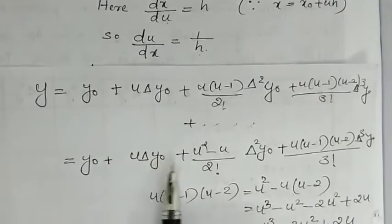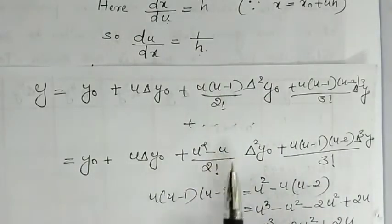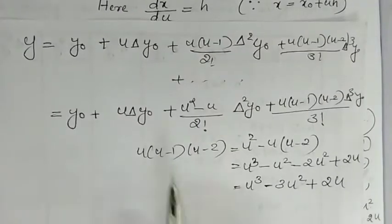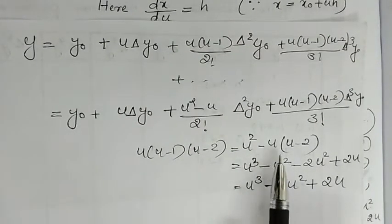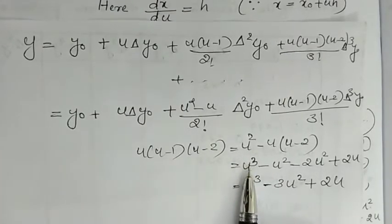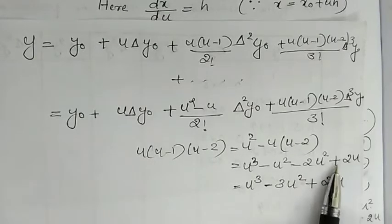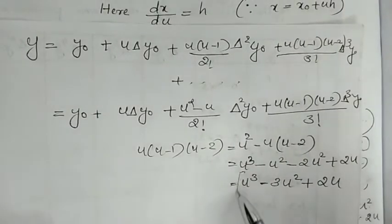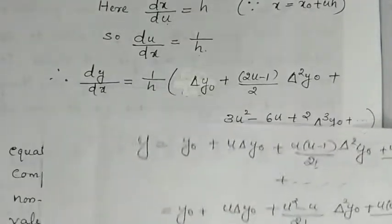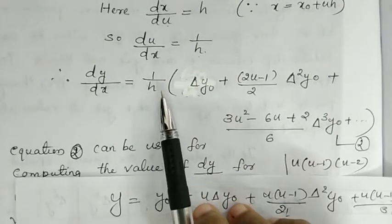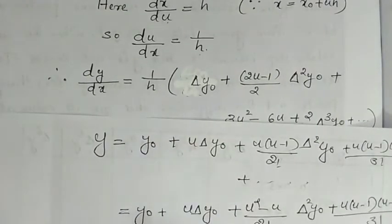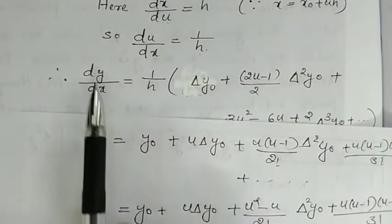Differentiating term by term: the term u²−u divided by 2! gives Δ²y₀; expanding u(u−1)(u−2) yields u³ − 3u² + 2u. So dy/dx = (1/h) into [Δy₀ + u·Δ²y₀ + ...].